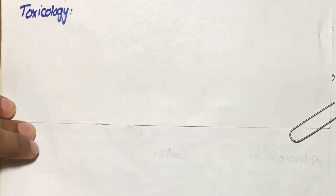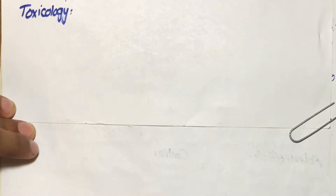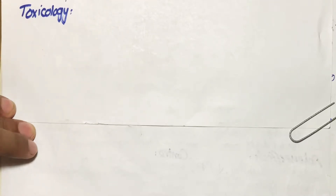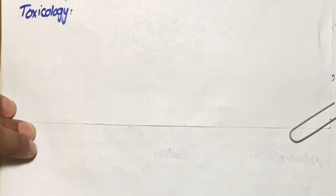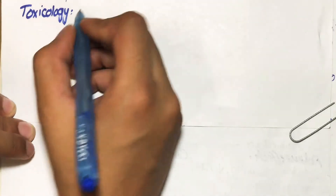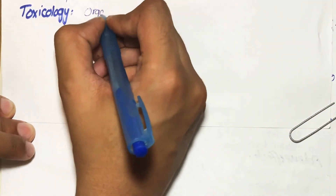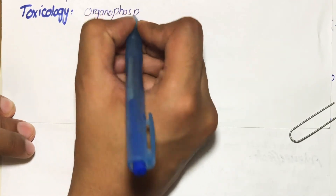In today's lecture we will be learning about toxicology of anticholinesterase agents. Irreversible acetylcholinesterase inhibitors have severe toxicity when given in increased amounts, because most irreversible inhibitors of acetylcholinesterase are organophosphate compounds.